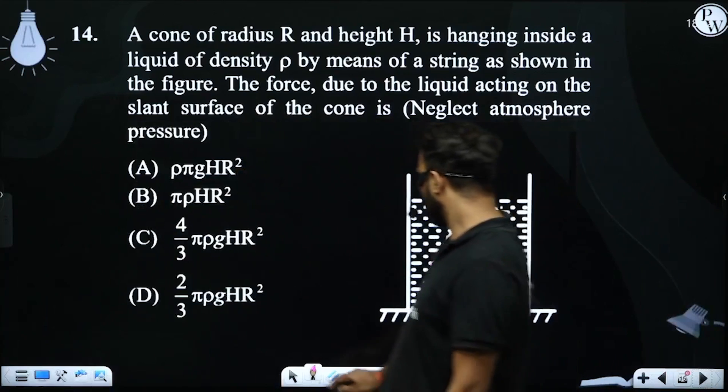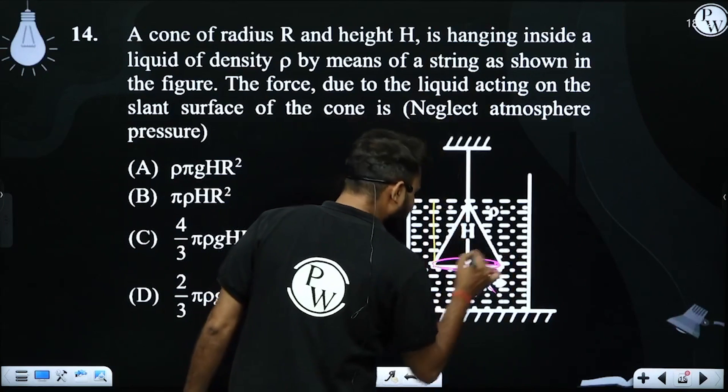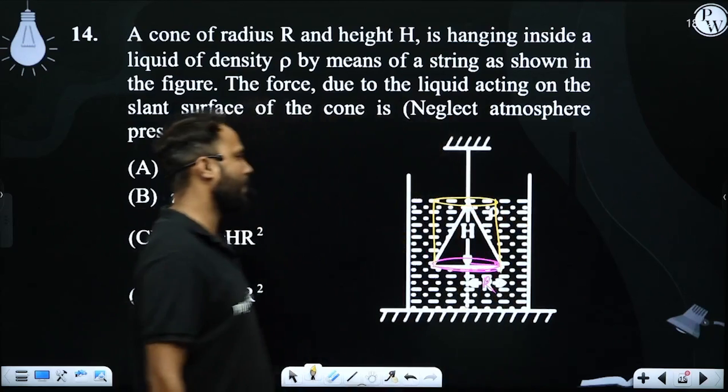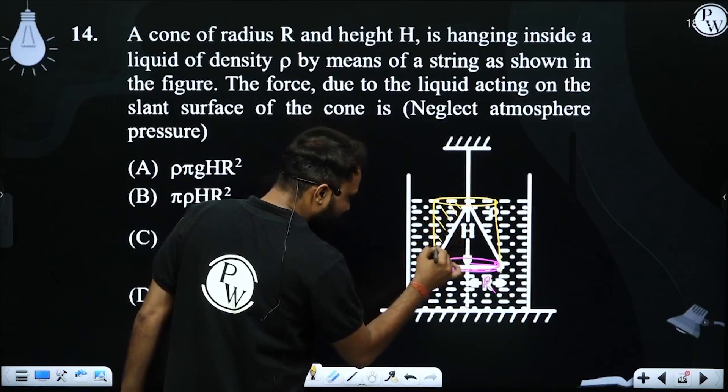If instead of the cone, we had a cylinder here, so basically a part of liquid would be present in this region.